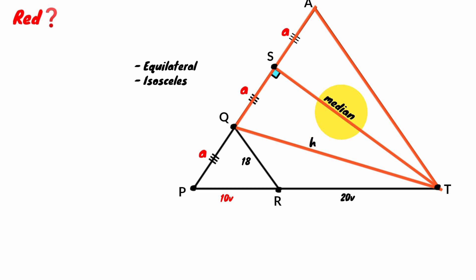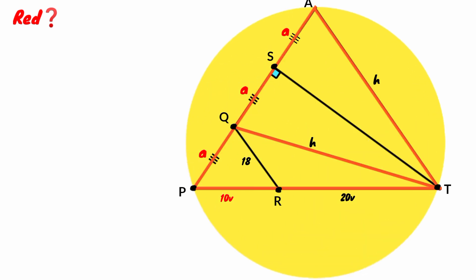Now let's look at this triangle APT. We have this line QR dividing the side AP into two segments: one with length A and the other two A's, in the ratio 1 to 2. Line QR also divides the other side PT such that this segment is 10V and the other is 20V, so it is also in the ratio 1 to 2.